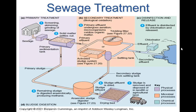When sewage is released from a house, it may contain a lot of large material that needs to be skimmed or removed — this is part of the primary treatment process. The sewage is also led to settle; by settling, you are able to separate the solid from the liquid. The solid goes down into primary sludge and into the anaerobic sludge digester.